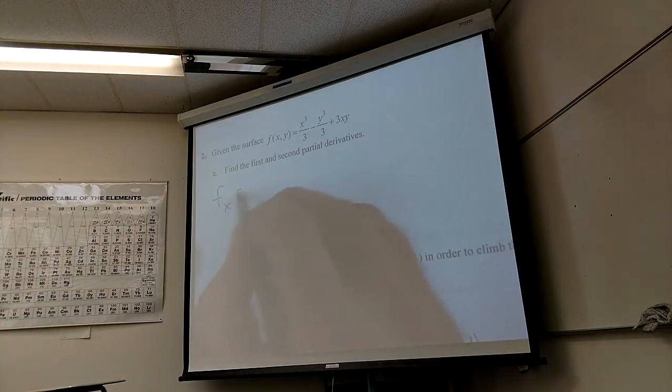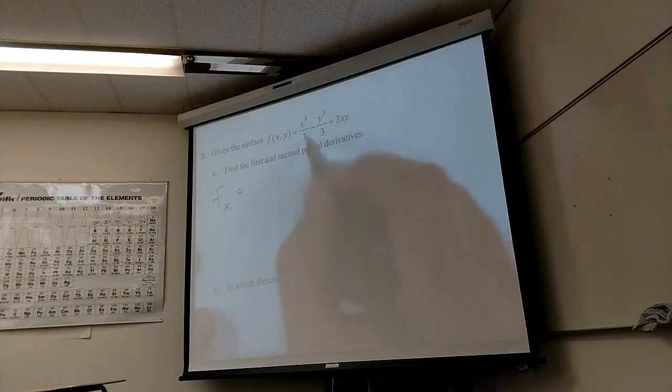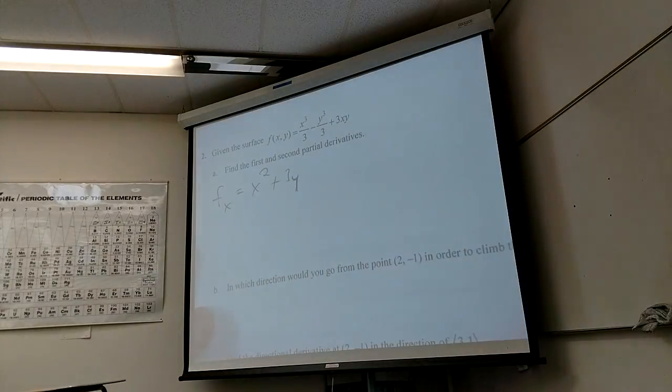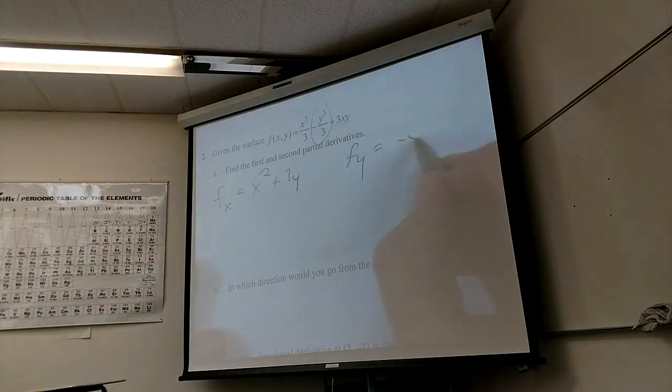So the first, what's fx going to be for this guy? x squared. Yeah, it's kind of nice, does over 3's kill that? Plus 3y. Plus 3y, I love it. Because 3y would be constant, x is the actual variable. Yes. What's fy? Minus y squared. Yeah, minus y squared. Plus 3y. Plus 3x, I like it.